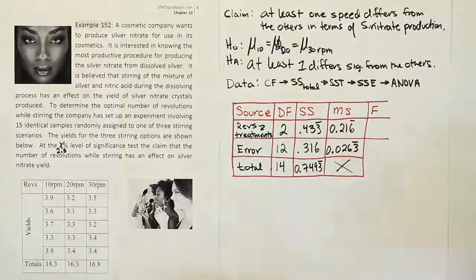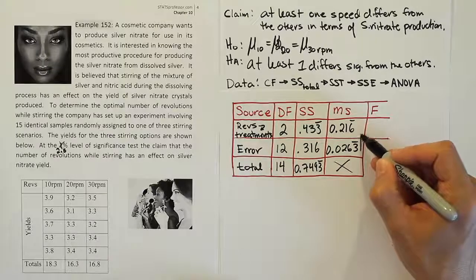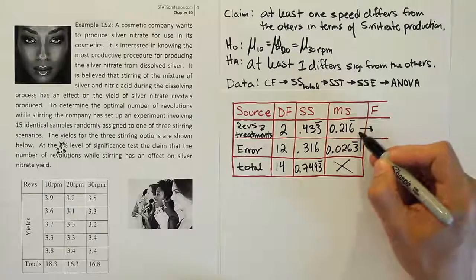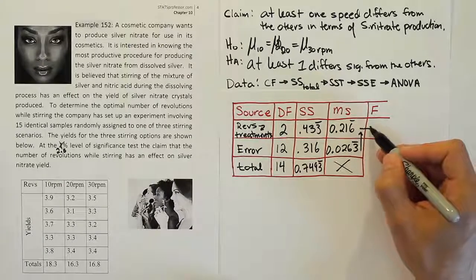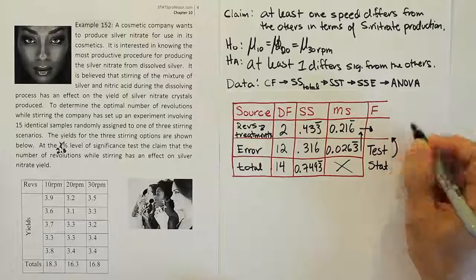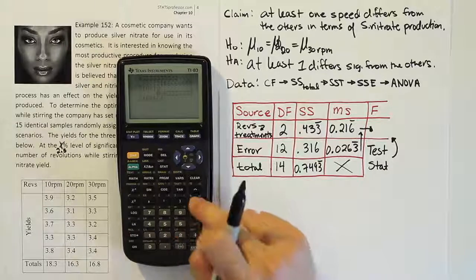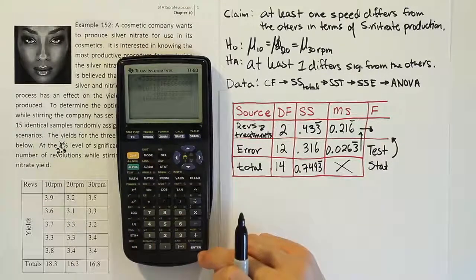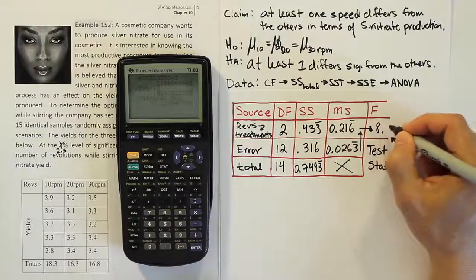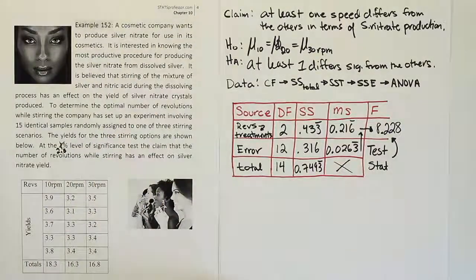Let's divide those two to complete our test statistic. We divide mean square for treatments by mean square for error: 0.216 repeating divided by 0.0263 repeating, and we get the answer 8.228. So our F test statistic is 8.228 — a pretty large test statistic — but we won't know if it's large enough to reject the null hypothesis unless we compare it against our critical value. So that's our next step.